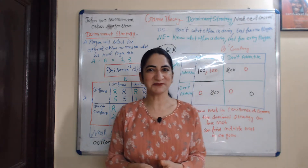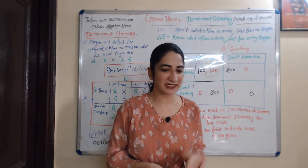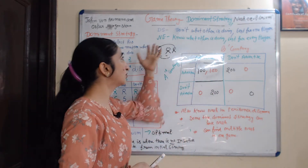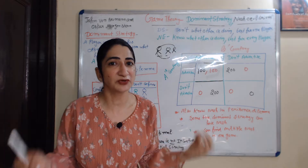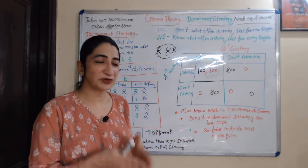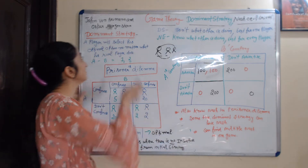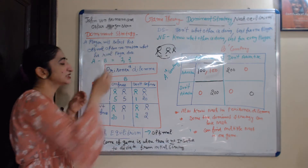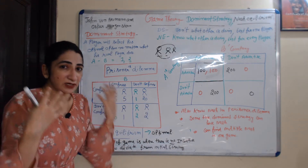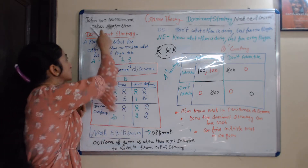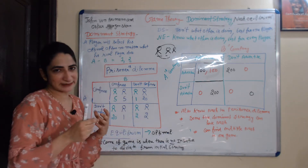Hello students, my name is Mini Seti. Today we are going to learn about game theory. This theory is given by mathematician John von Neumann and economist Oscar Morgenstern.